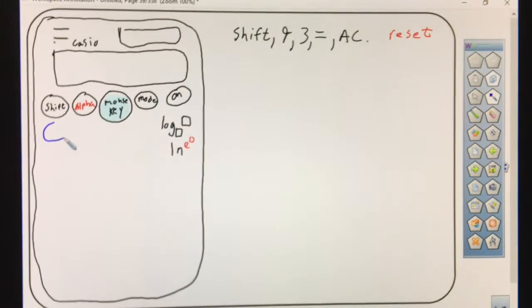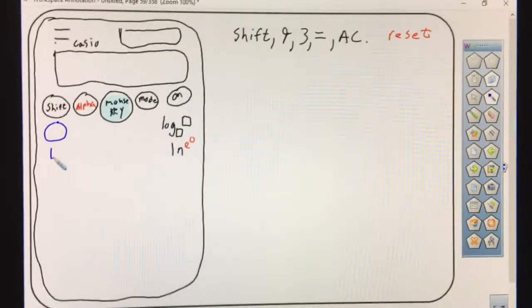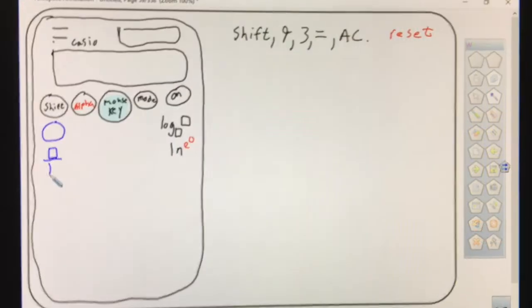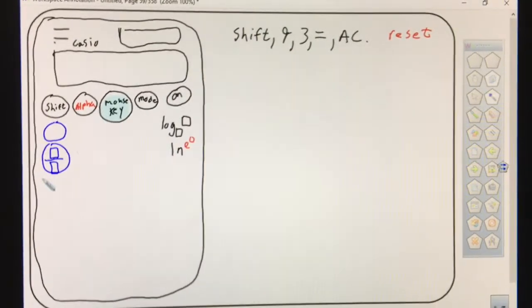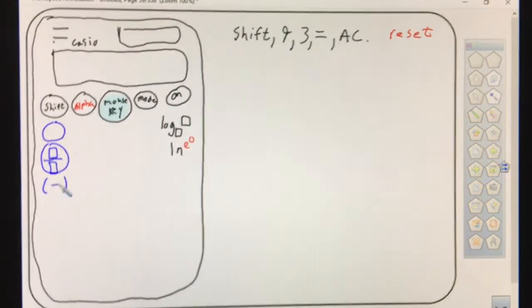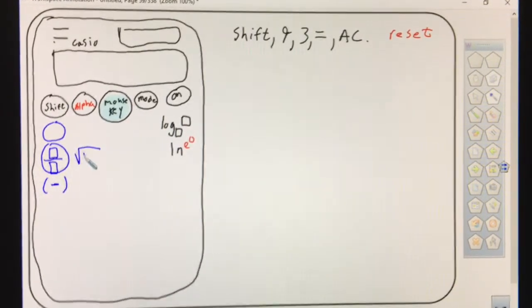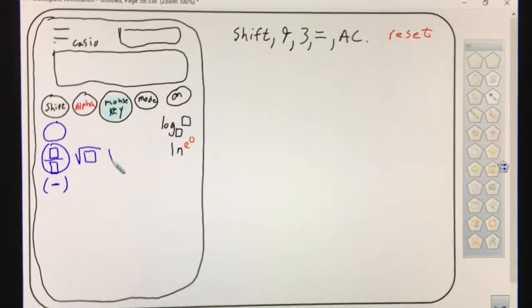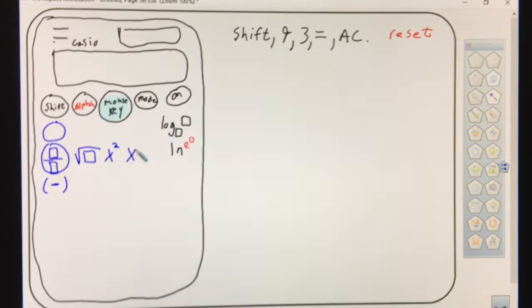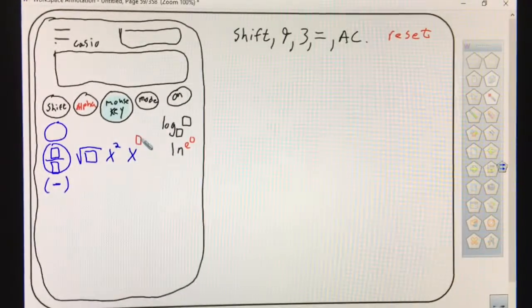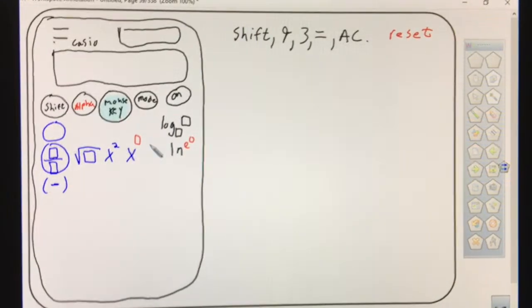There's a useless calc button we don't use, but underneath that is the fraction button, which we use a lot. Then the negative button. To the right of the fraction button is the square root key, then X squared, and X box, which you'll use a ton. After X box is the normal log, which doesn't have log base.